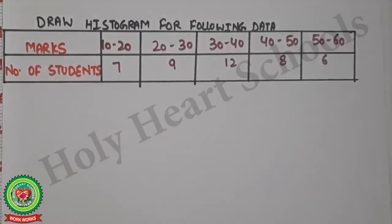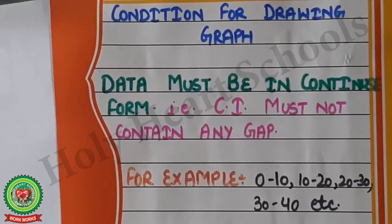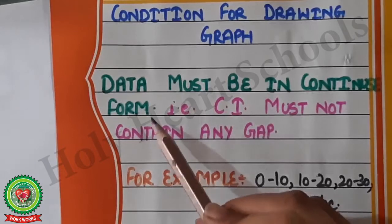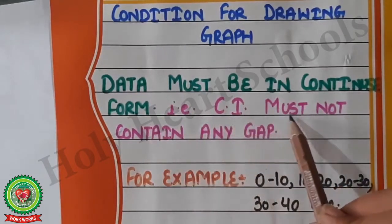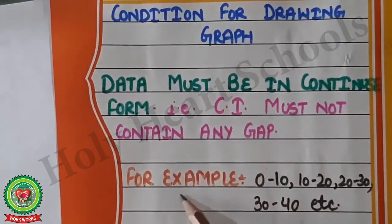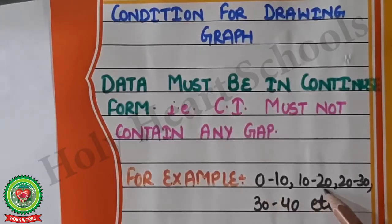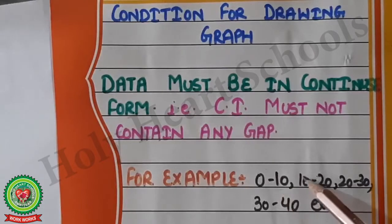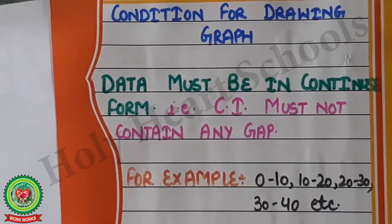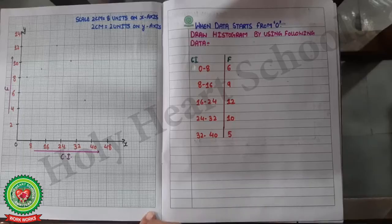Before drawing the graph, we must follow one condition: the data must be in continuous form, meaning the class interval must not contain any gap. For example, class intervals must be 0–10, 10–20, 20–30, 30–40, and so on. From where one class interval ends, the next class interval must start from that same number.